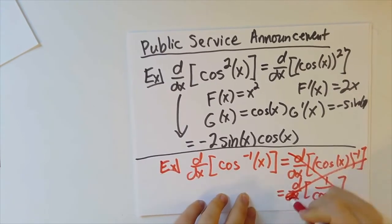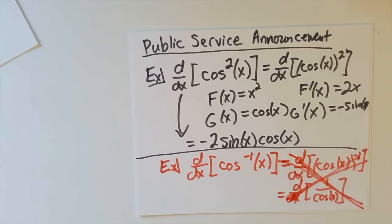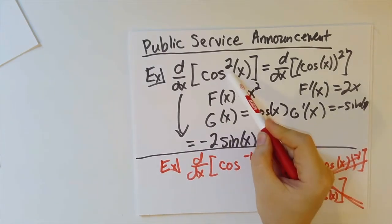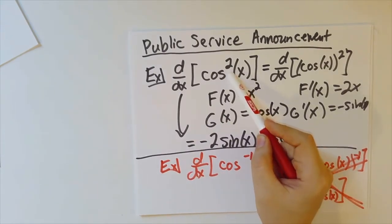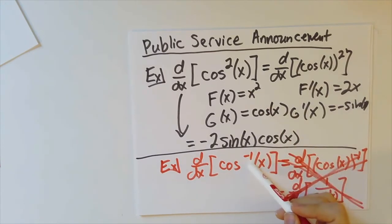But this is not right. You cannot do this because mathematicians made a very poor notational choice. Cosine squared means cosine of x to the second power, but cosine to the minus 1 does not mean cosine of x to the minus 1 power.